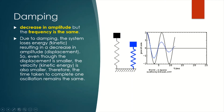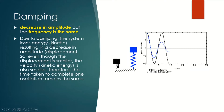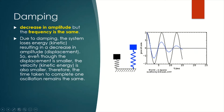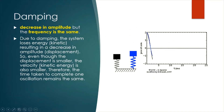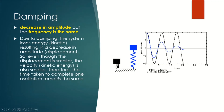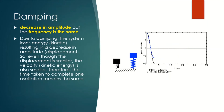Due to damping, the system loses energy — the kinetic energy — resulting in a decrease in amplitude. So even though the displacement is smaller, the velocity and kinetic energy are also smaller. Therefore, the time taken to complete one oscillation remains the same. That's all about damping.